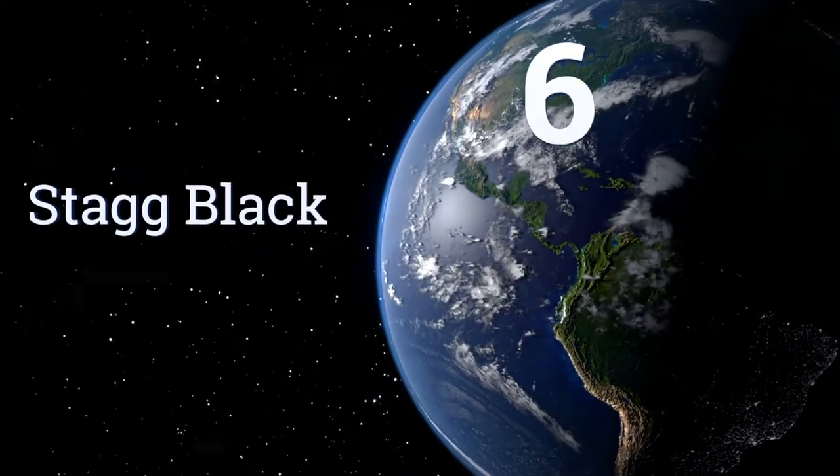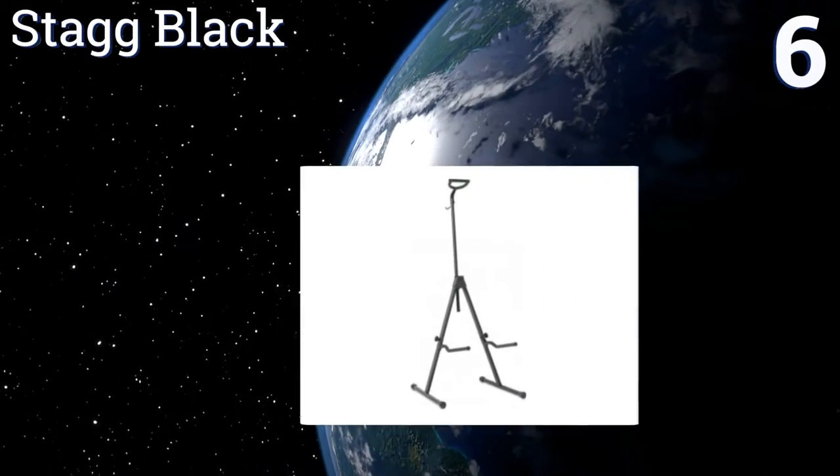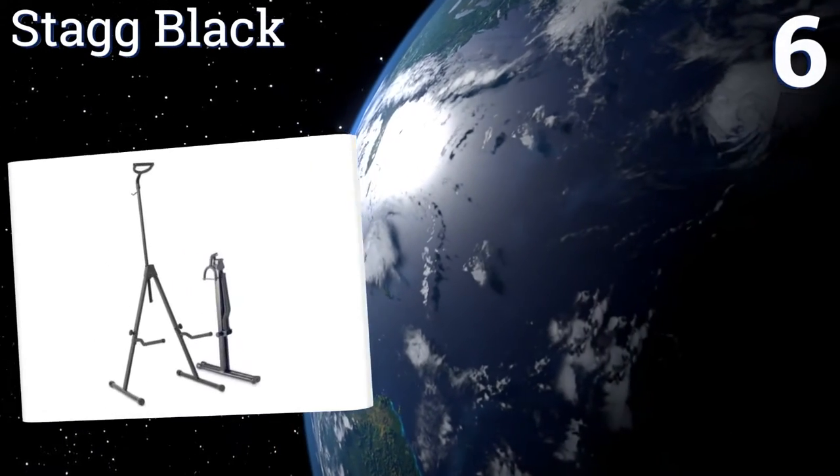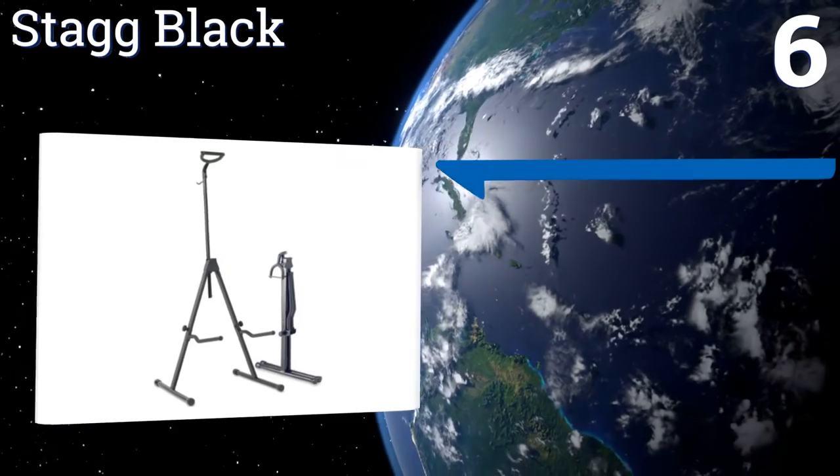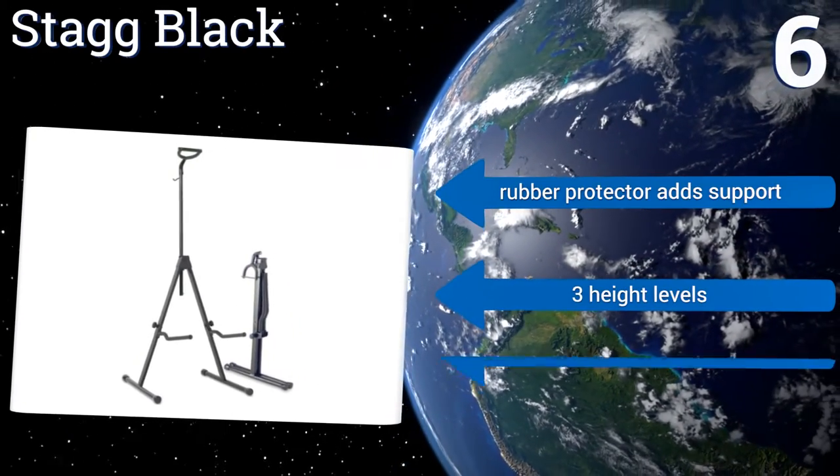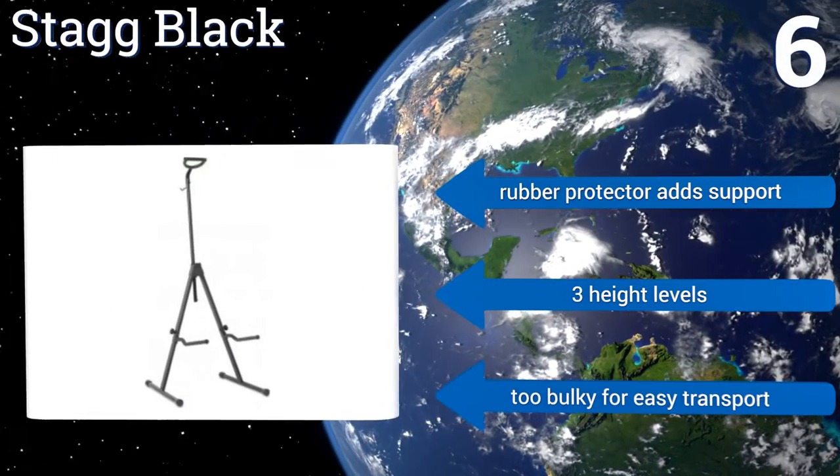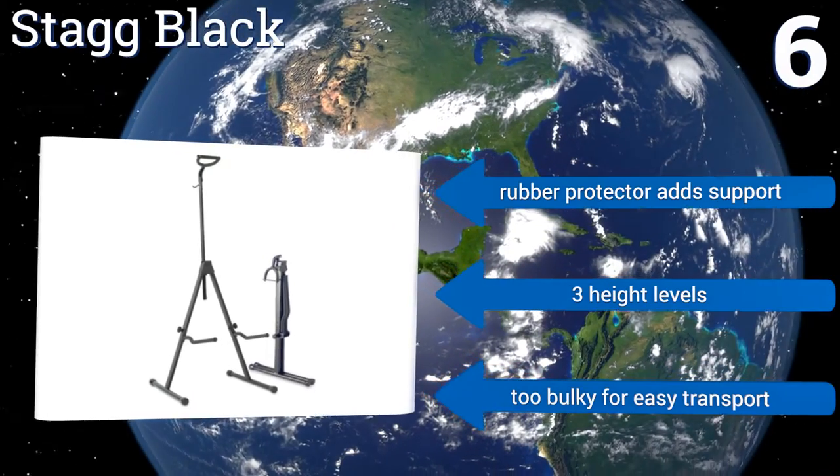Coming in at number six on our list, designed for cellos and smaller double basses, the Stagg Black lacks sharp edges and dangerous points, eliminating any worry of inadvertently damaging your instrument when putting it away. The stand is quite stable even when fully extended. A rubber protector adds support and it offers three height levels, however it is too bulky for easy transport.